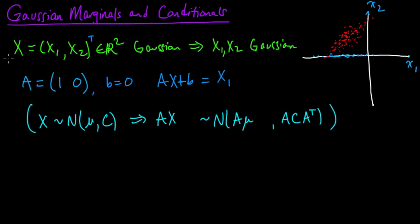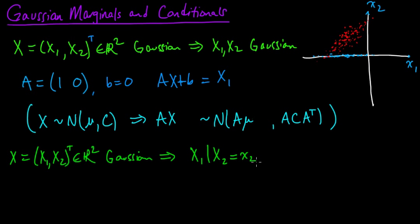Let's start out with a similar little example to get some intuition. We have the same setup, a Gaussian in R2 just like before. In this case, we also have the fact that the conditional distribution on x1 given that x2 takes a particular value is also Gaussian.